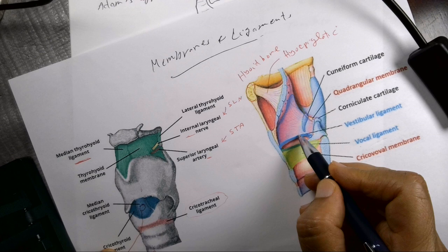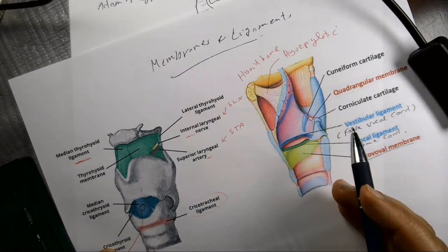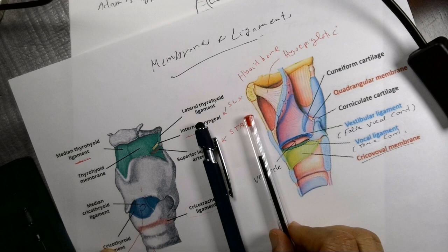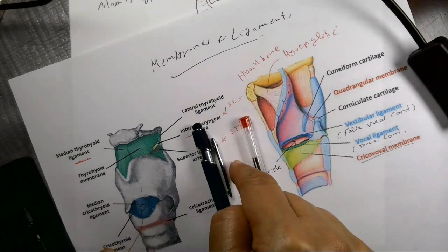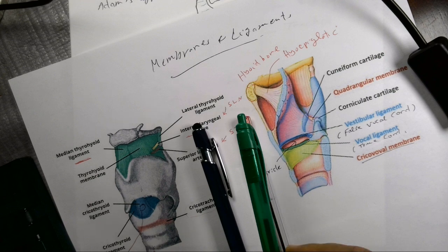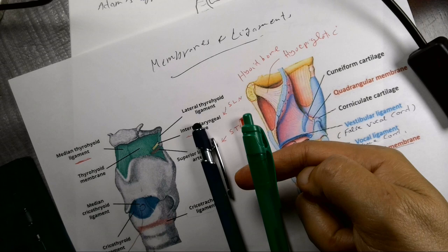Inside the laryngeal cavity, there is a space between the vestibular fold and the vocal cord. On the lateral wall this space is called the laryngeal ventricle. If you extend your finger deeper and laterally past the quadrangular membrane, you extend into the saccule. The two vocal cords — one on each side — have a space between them called the rima glottidis. So the space on the lateral wall is the ventricle, and the space between the vocal cords is the rima glottidis.